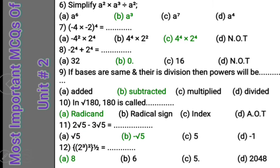Question 6: a squared into a cubed divided by a squared — what is the simplified answer? The a squared in the numerator and a squared in the denominator cancel each other. The remaining expression is a cubed, so a power three is the simplified answer. Option B is correct.